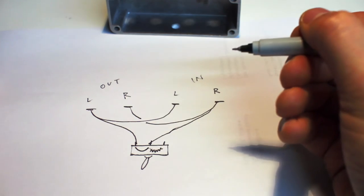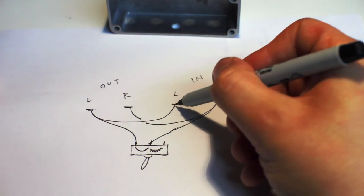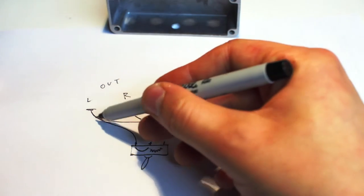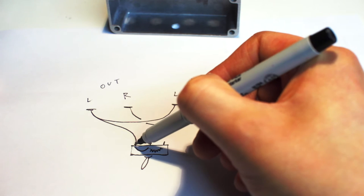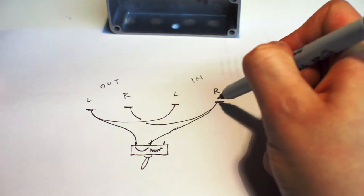But, when the switch is thrown this way, with these two terminals connected, left comes in, goes to left out, but then this wire, via the switch, contacts this wire, which connects it to the right side.